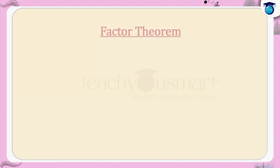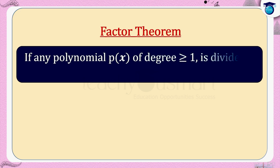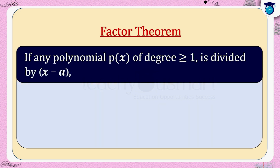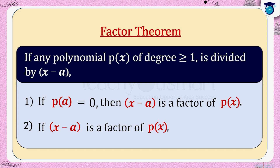And the factor theorem: if any polynomial p of x of degree greater than or equal to 1 is divided by x minus a, and if p of a equals 0, then x minus a is a factor of p of x. Conversely, if x minus a is a factor of p of x, then p of a equals 0.